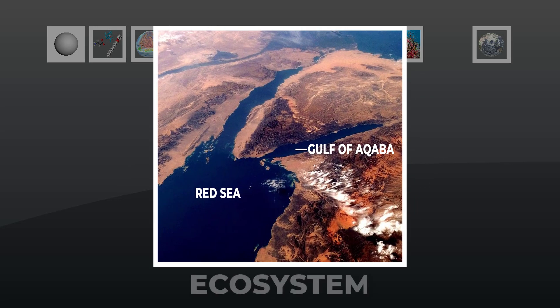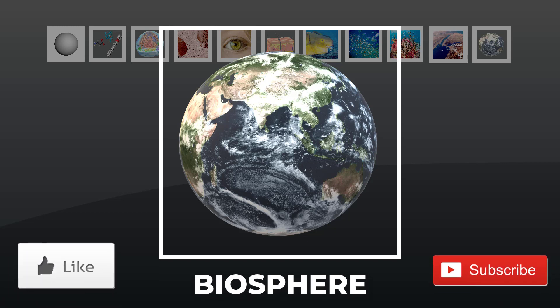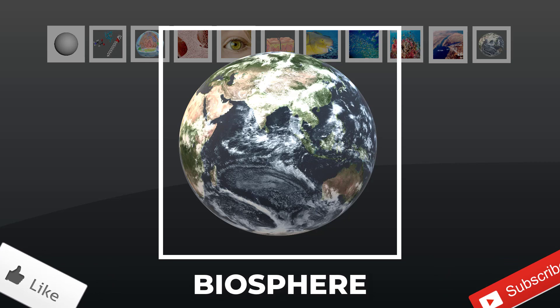An ecosystem is a community that is interacting with its physical environment. It has inputs and outputs of energy and materials. Reef ecosystems flourish in warm, clear sea waters throughout the Middle East. The biosphere encompasses all regions of Earth's water, crust, and atmosphere that hold organisms. In the vast universe, Earth is a rare planet.